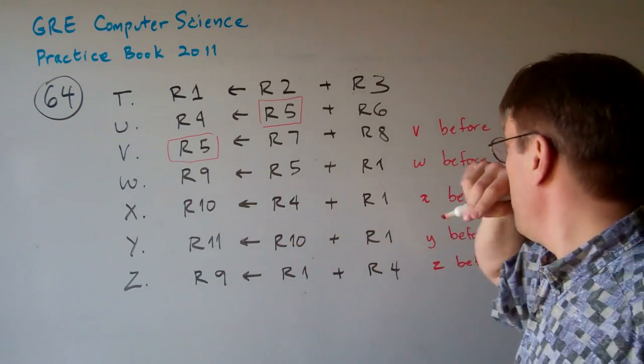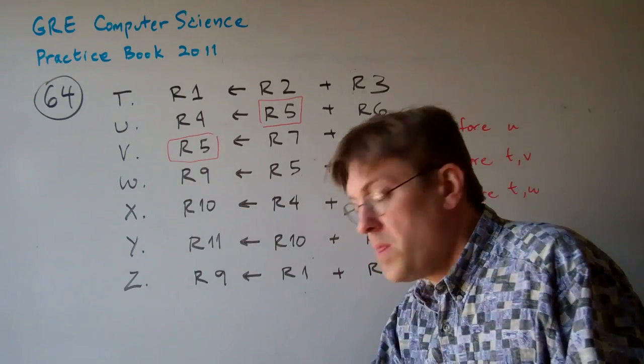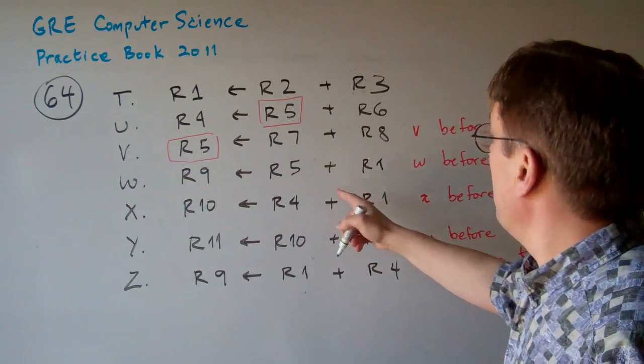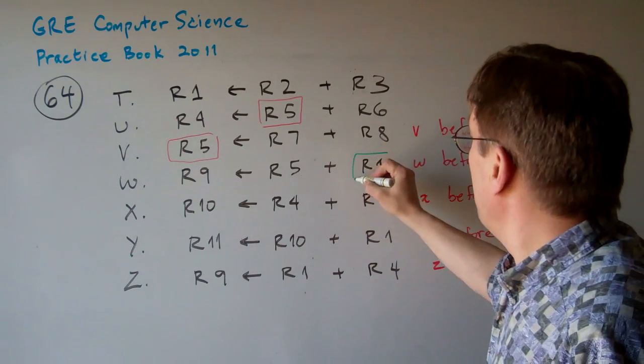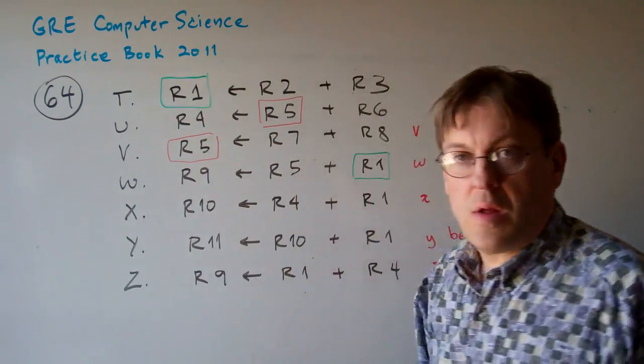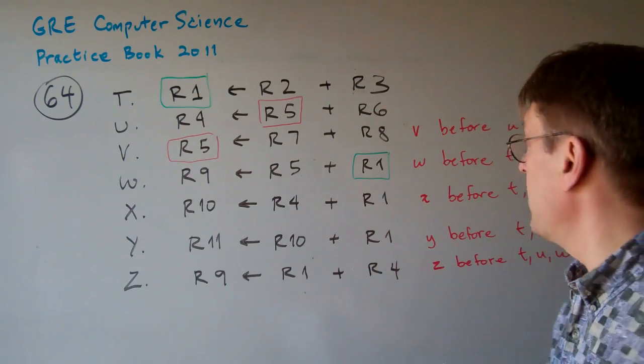Same thing goes for W. If there's a W before T, then the W is using R1 and T is outputting R1. So, you can basically check the inputs and the outputs and make sure that there's no conflicts there.